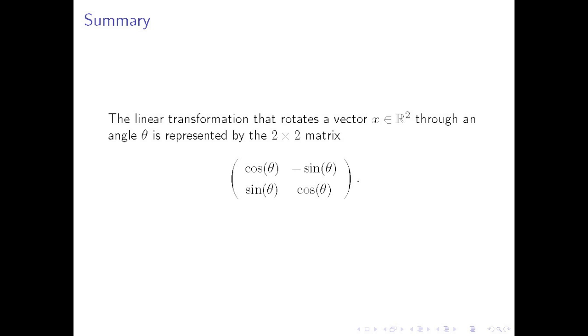So, to summarize, the linear transformation that rotates a vector x through an angle theta is represented by the matrix with cosine along the diagonals, minus sine above the diagonal, and sine below the diagonal. Multiplying with this matrix will give you the transformed vector as if it had been rotated.